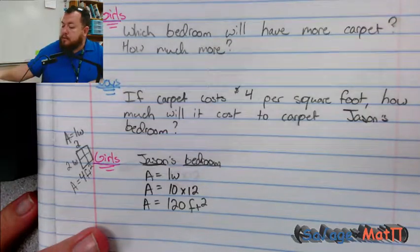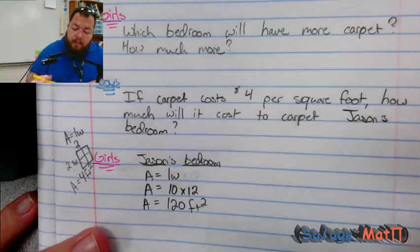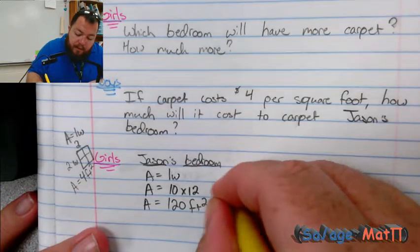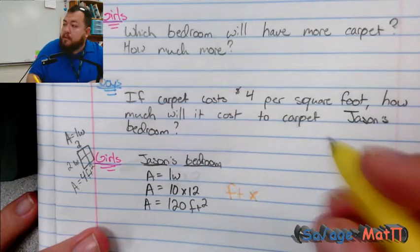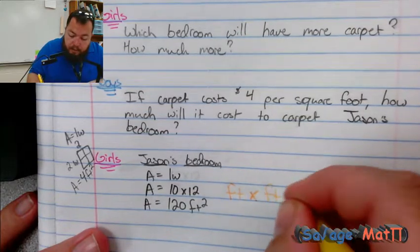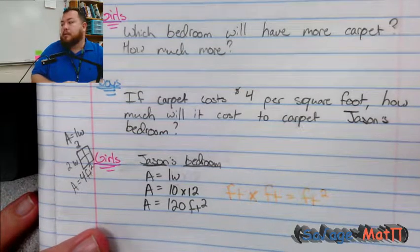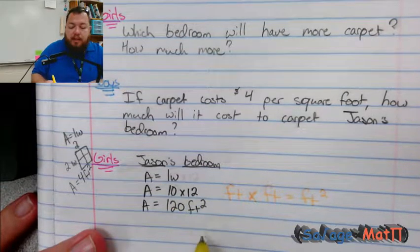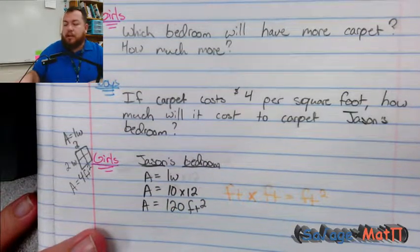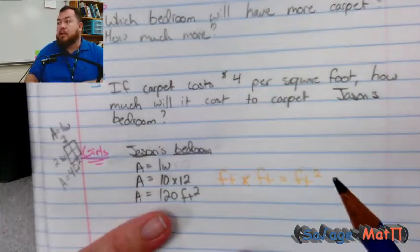Remember, we have square feet because it's feet times feet equals feet squared. That's how we get feet squared: 10 feet times 12 feet equals 120 feet squared.